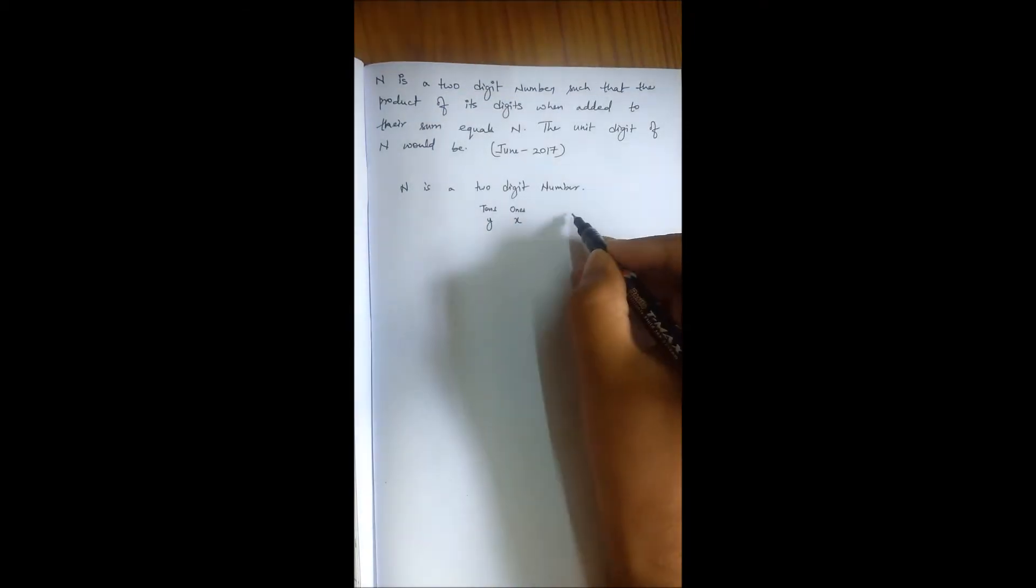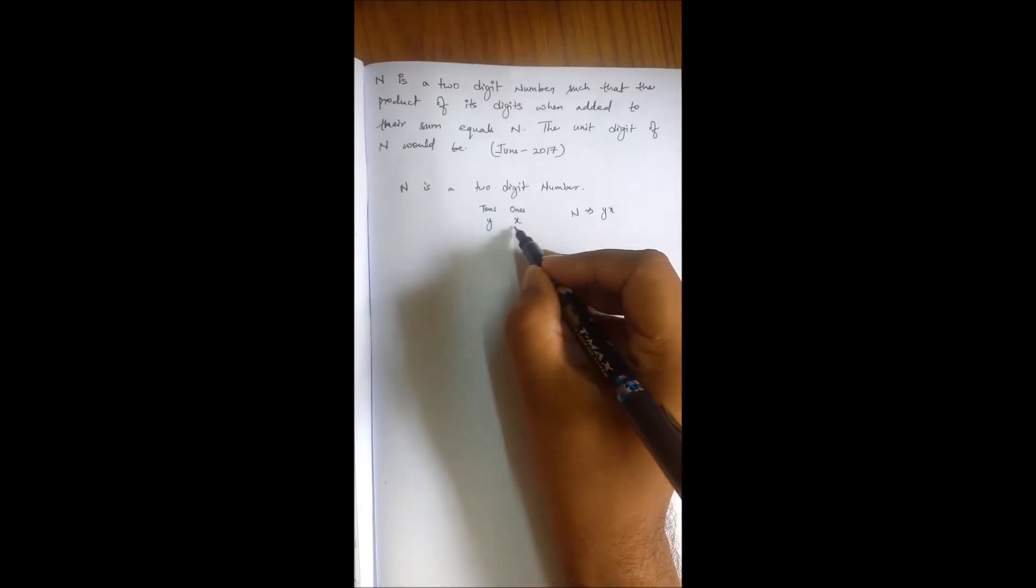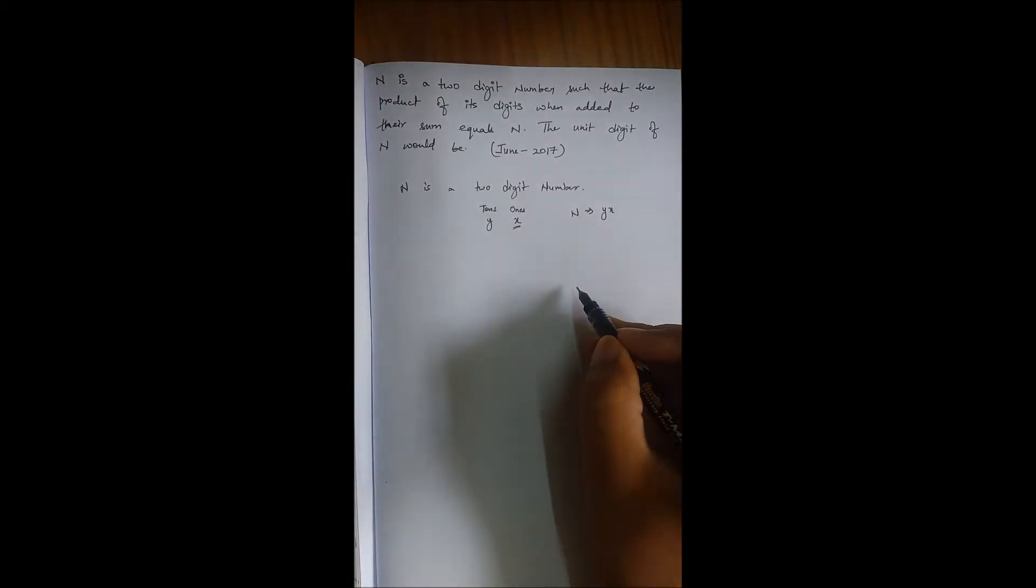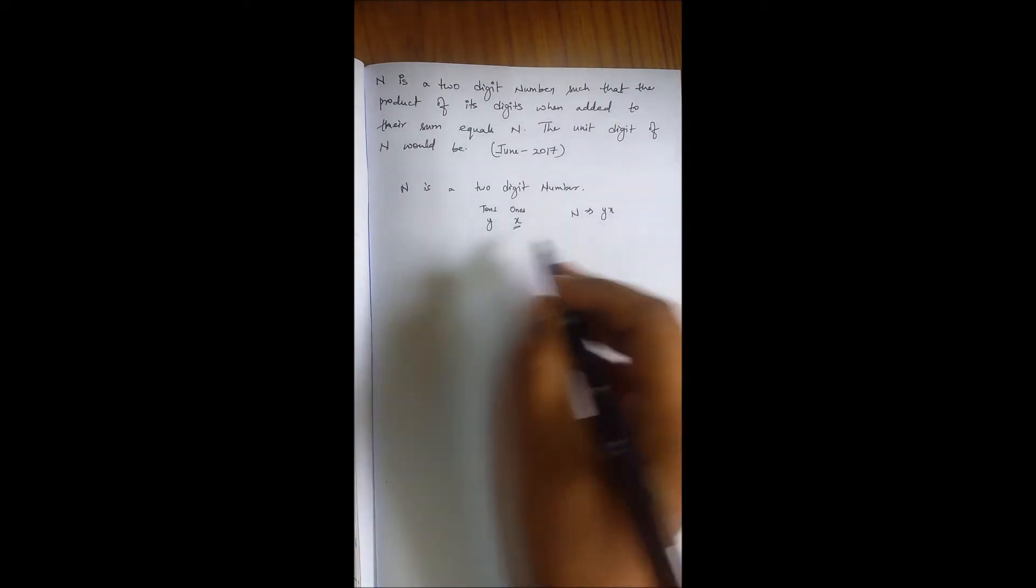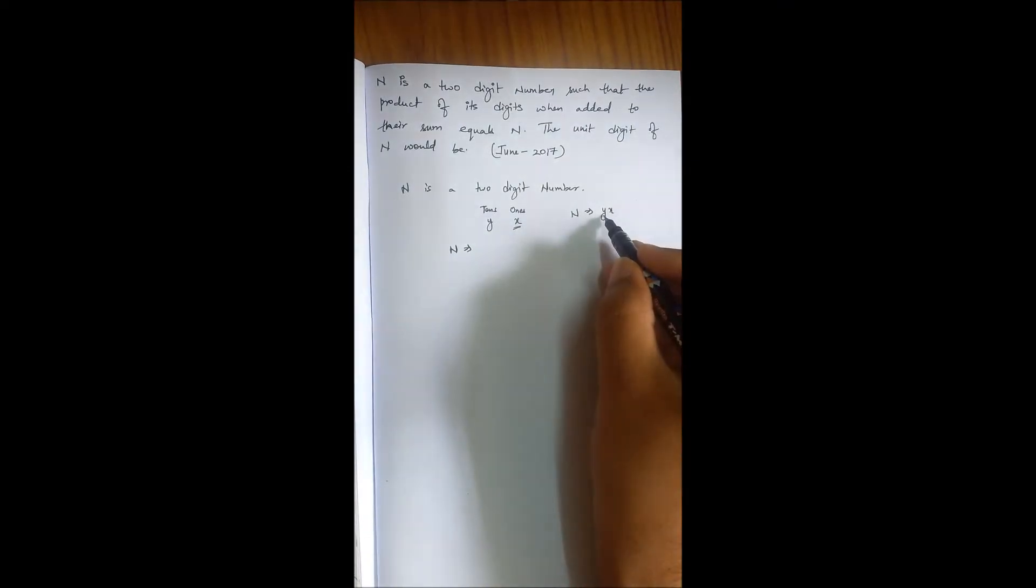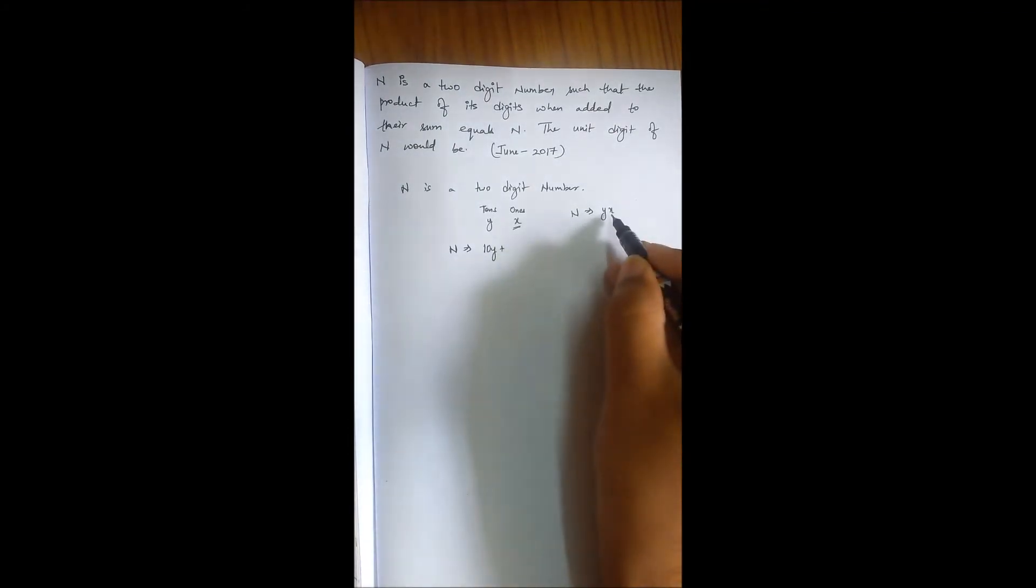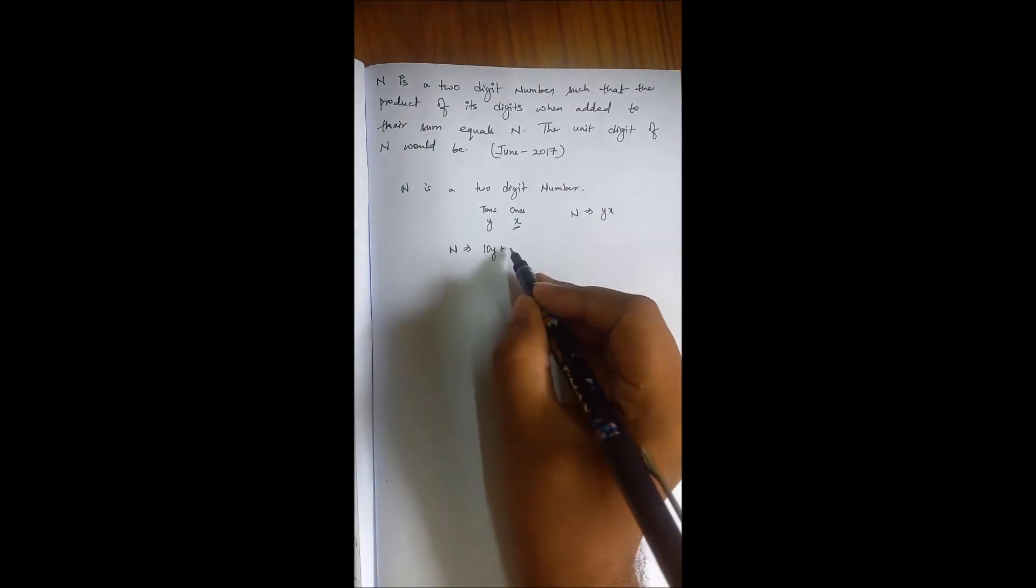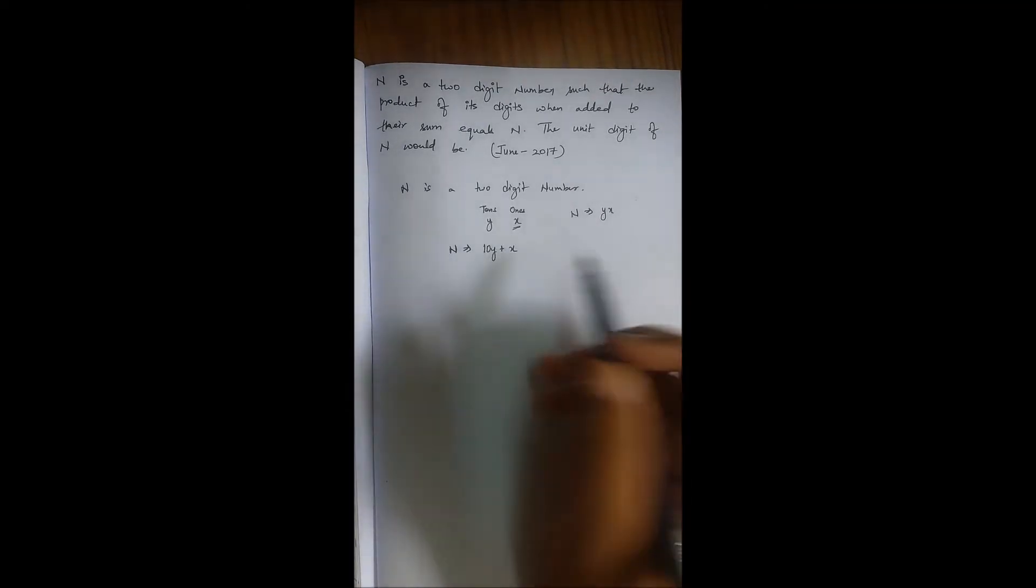So N will look like YX. We have to find out X here. Or you can write YX in the form of place values. N can be written as, since the place value of Y is 10, it will be 10Y, plus the place value of X is 1, so it will be X. So N can be written as 10Y plus X.